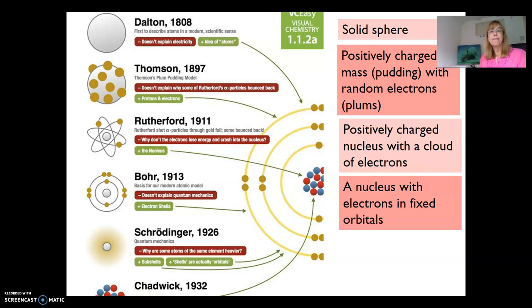Then J.J. Thompson came around almost 80 years later. Through experiments he worked out that it's really a positive mass, a bit like a pudding or biscuit made out of protons, and the electrons were randomly dotted in between like chocolate chips on a cookie. His model was known as the plum pudding model.